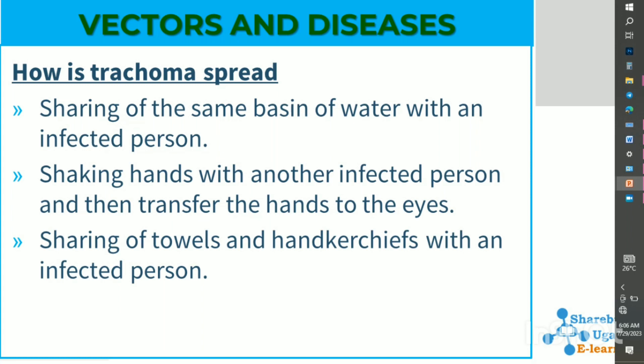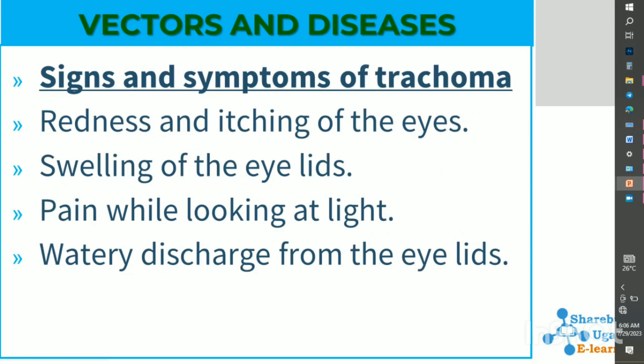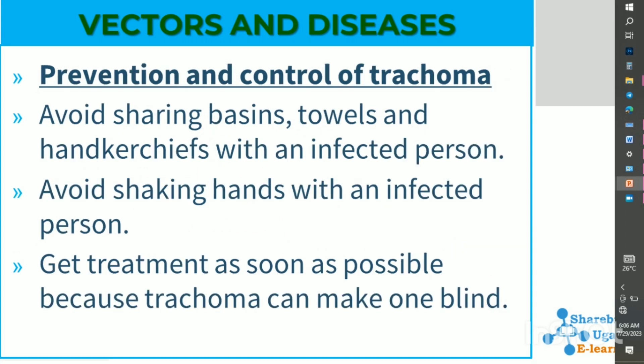Trachoma is also spread by sharing towels and handkerchiefs with an infected person. Signs and symptoms of trachoma include redness and itching of the eyes, swelling of the eyelids, pain while looking at bright lights, and watery discharge from the eyes.